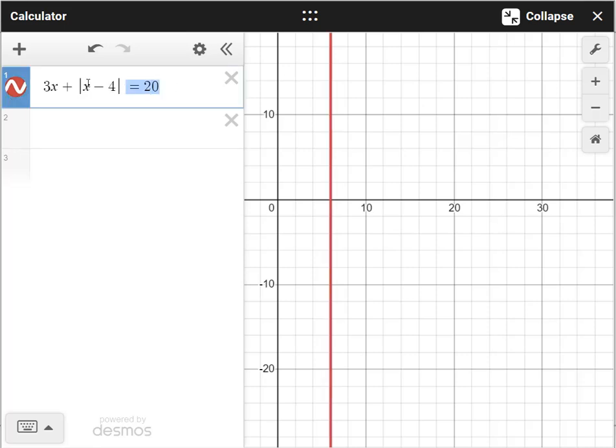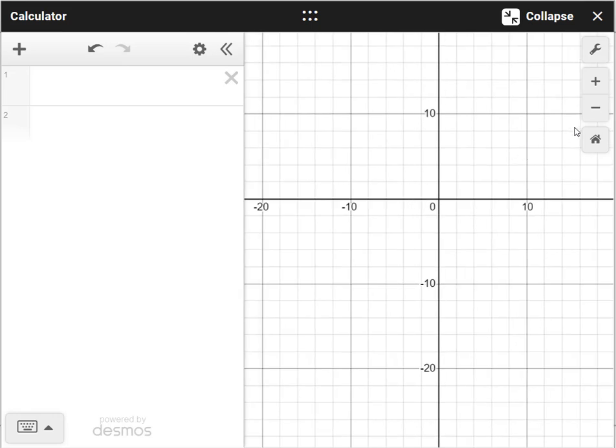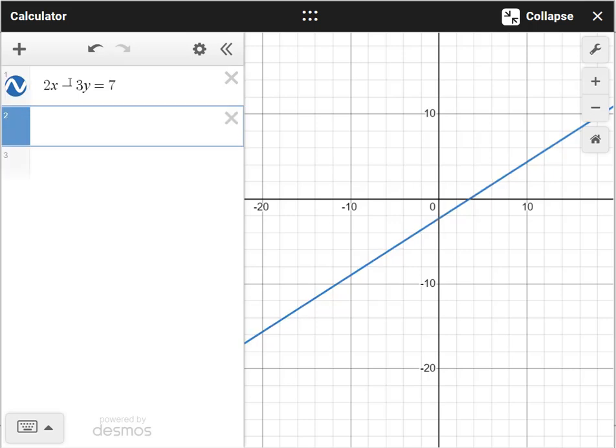So that would be another example. So no matter what form they give you a linear equation, just graph it. And then the final example is the system of linear equations. Remember, you may have to zoom out or zoom in. And this is, of course, a very classic type of question. 2x minus 3y equal to 7. And then minus x plus y equal to minus 3.